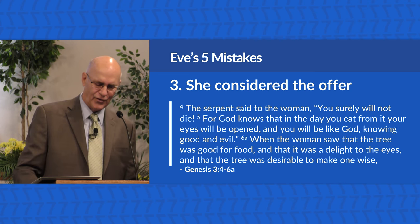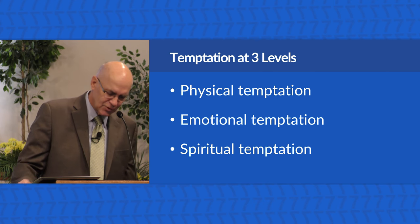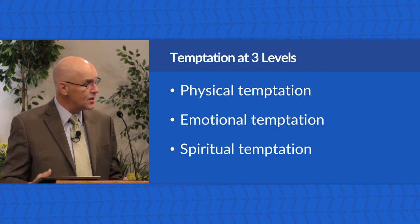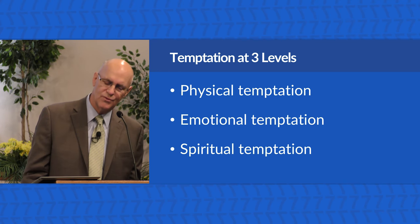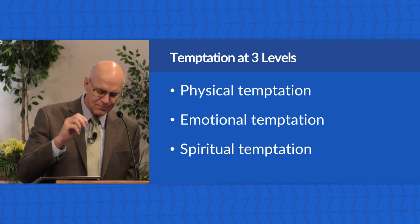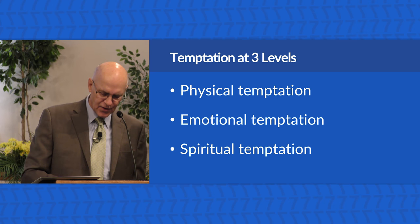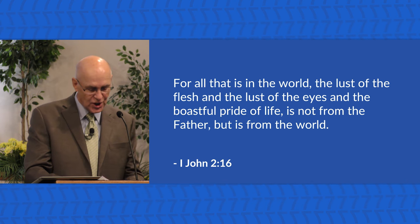In considering the offer, Eve was opening herself up for temptation at three levels. First, physical temptation — it's good for food, something that appeals to the senses, something pleasurable. Second, emotional temptation — it was pleasant to the eyes, something beautiful aesthetically, something that moves you. Third, spiritual temptation — a desire to make one wise, an appeal to the mind and intellect and pride, to have special insight or special vision. John the Apostle talks about these three areas of temptation in 1 John 2:16: 'For all that is in the world, the lust of the flesh and the lust of the eyes and the boastful pride of life, is not from the Father but is from the world' — demonstrating that what is written in Genesis is timeless.